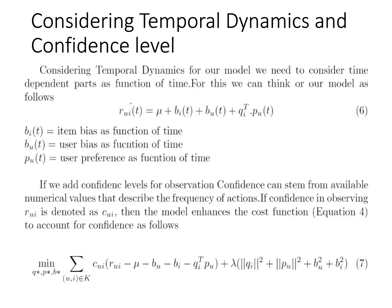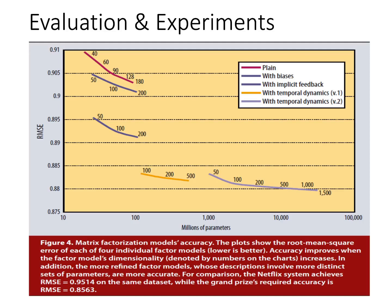Taking temporal dynamics into consideration, biases and user preferences change over time. The terms b_i, b_u, and p_u each become a function of time, so the rating matrix also represents a function of time within its parameters. A confidence level is also introduced: if a user rates an item multiple times, that item is preferred more, and this confidence level increases the minimization technique.